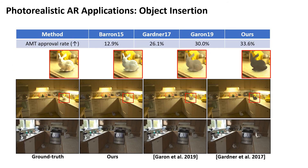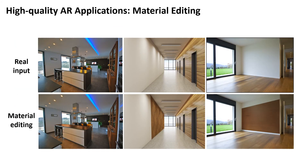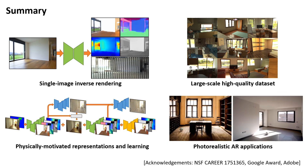We also conduct a user study using the ground-truth spatially varying lighting results from Garon et al. Our object insertion results are evaluated to be more realistic compared to prior works. Besides object insertion, we can also perform material editing by swapping the material in the image. Our spatially varying lighting prediction can also be used to render specular materials, which cannot be handled by previous intrinsic decomposition methods.